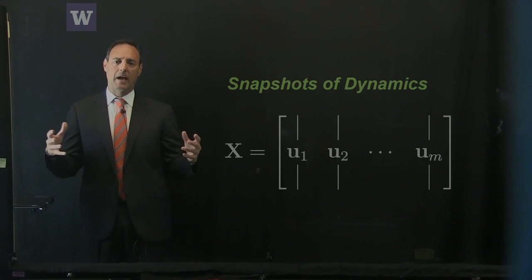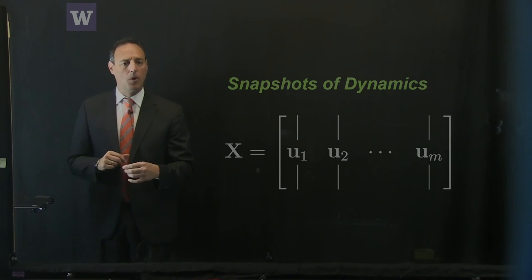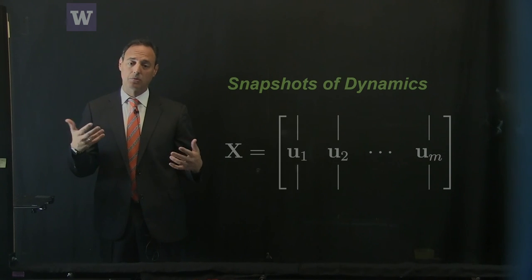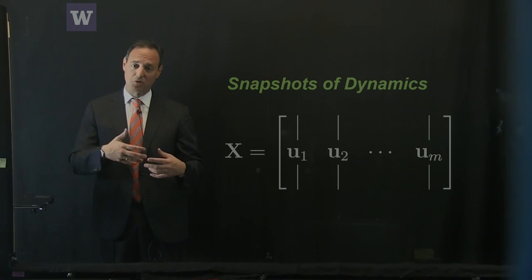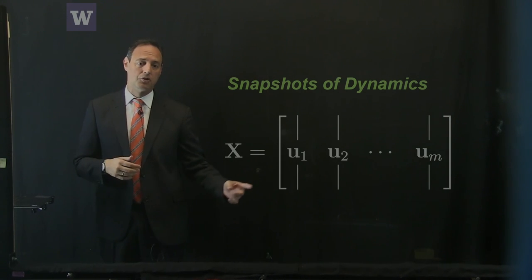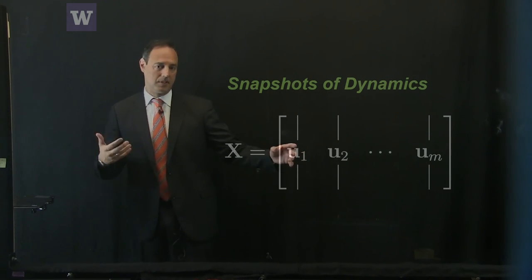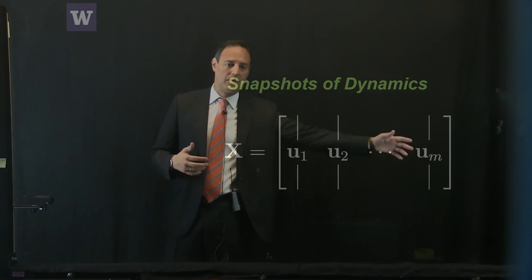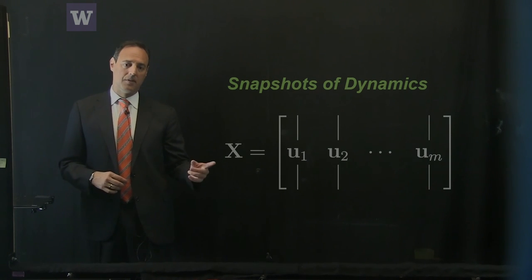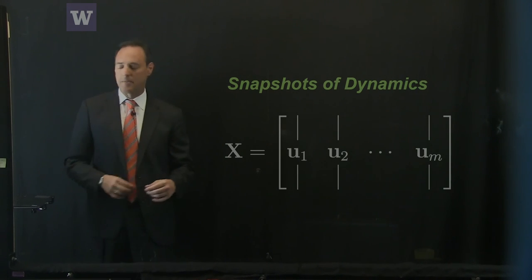First, let's figure out how to project the dynamics onto some low-dimensional subspace. One way is to collect snapshots of the evolution dynamics. You'll need to do some high-fidelity computation — solving large-scale systems for a while to generate sample snapshots. So u1 is at time t1, t2, all the way to tm. You build this large data matrix of snapshots, called X, and look for low-rank structures within it.